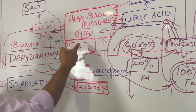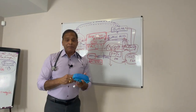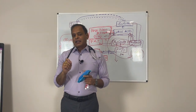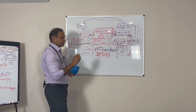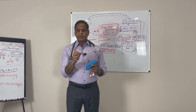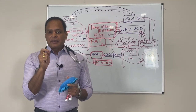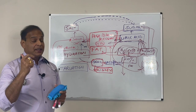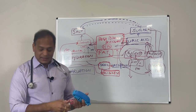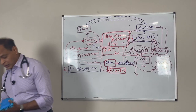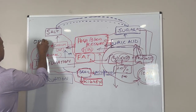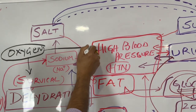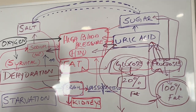With dehydration we make fat — why is this important? Because fat is made because of a survival signal. There are three important survival signals that the body perceives as a threat, either from inside or outside. One of the biggest survival signals is dehydration, the second is starvation, and the third very important one is oxygen. When there is no oxygen, that survival signal can also increase blood pressure because the body is trying to conserve and save itself.